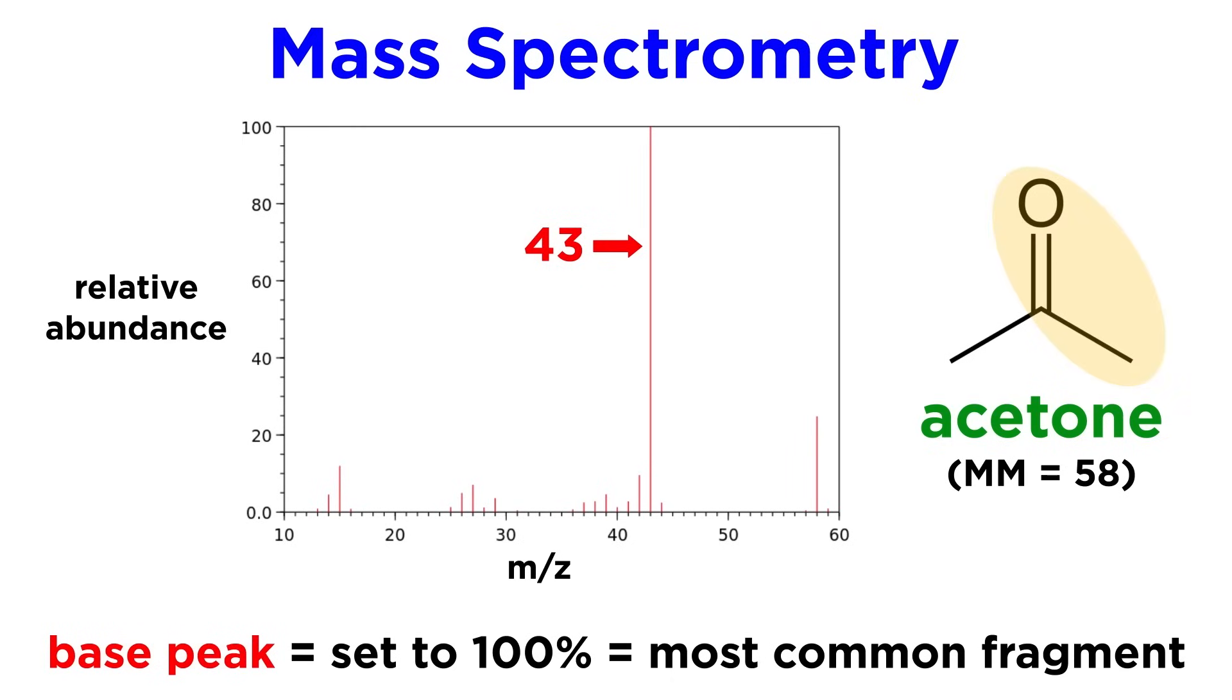It is easy to identify this as the fragment that remains if one methyl group has been removed. A methyl group has a mass of 15, so subtracting 15 from 58 gives us 43.